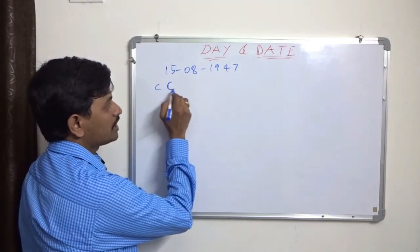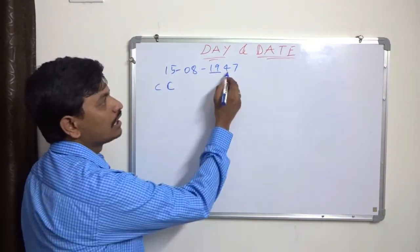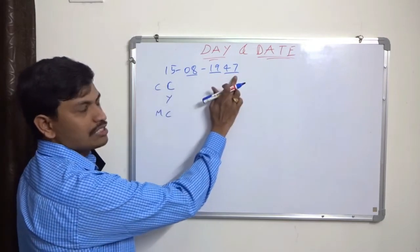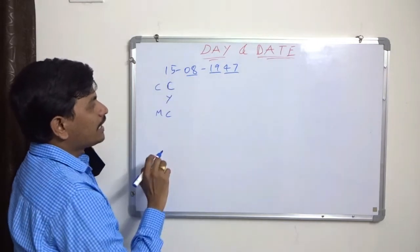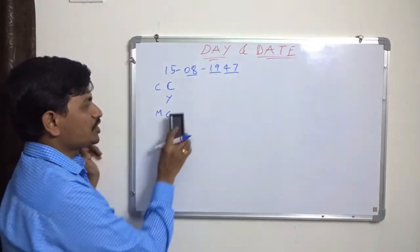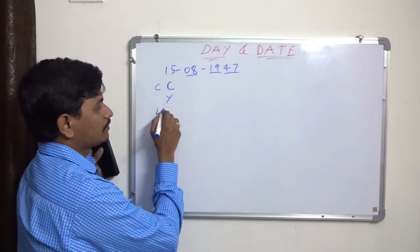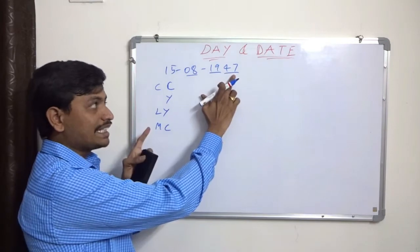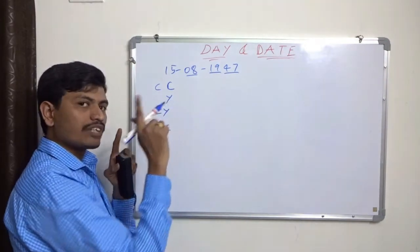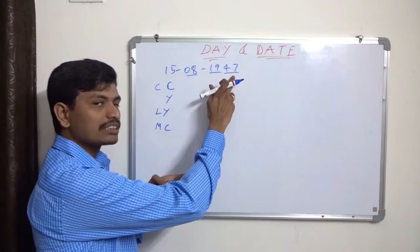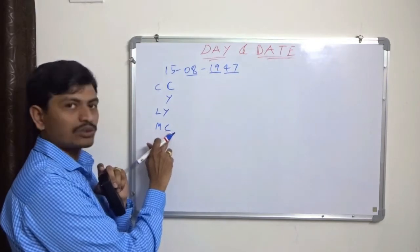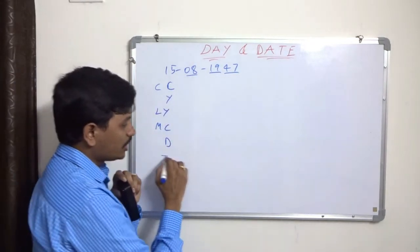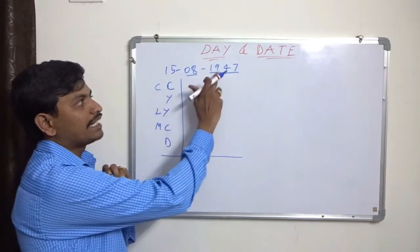For any date calculation, you take: century code, year odd days, leap years, month code, and date. For 15th August 1947, the century is 19th. We need to calculate five things: century code, year, leap years in the year, month code for August, and the date directly.